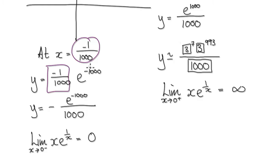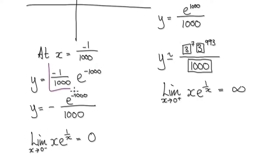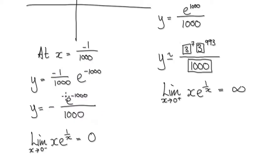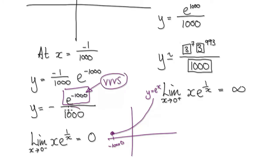At x equals negative one over one thousand, we get x times e to the power of one over negative one over one thousand. Tidying this up, the exponent becomes negative one thousand. So we have one block times e to the power of negative one thousand. Looking at the graph of e to the power x, at negative one thousand, this block is going to be very, very small — so very small divided by one thousand becomes extremely small.